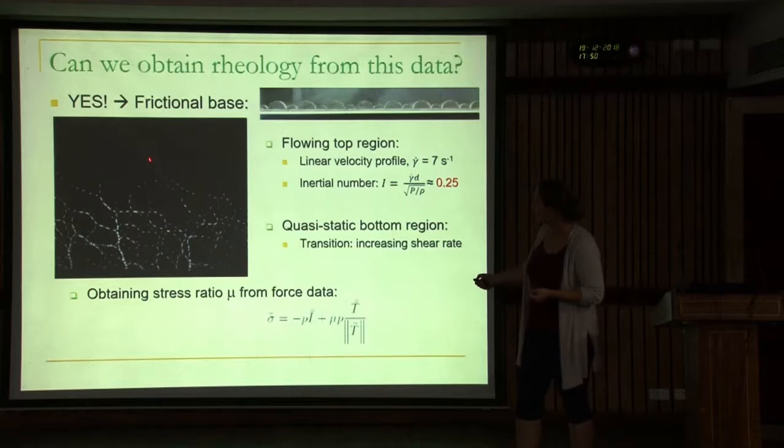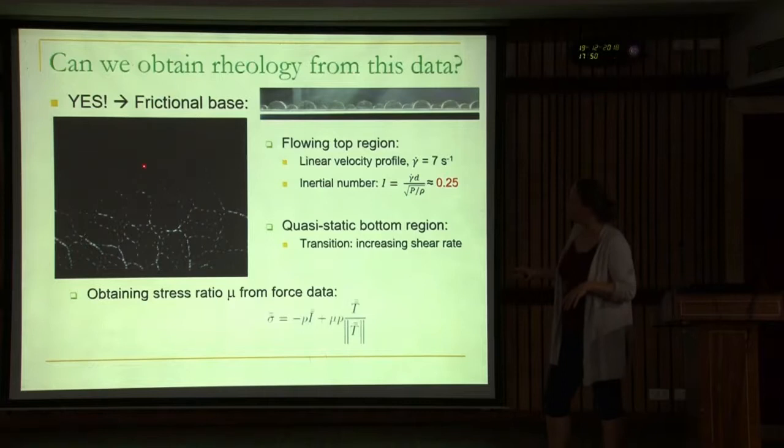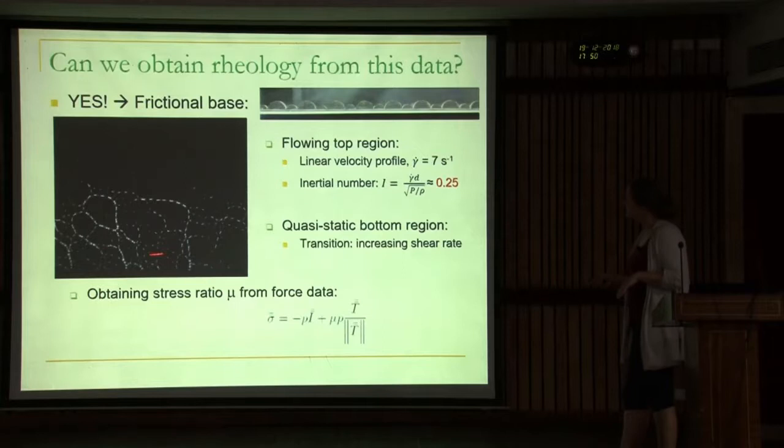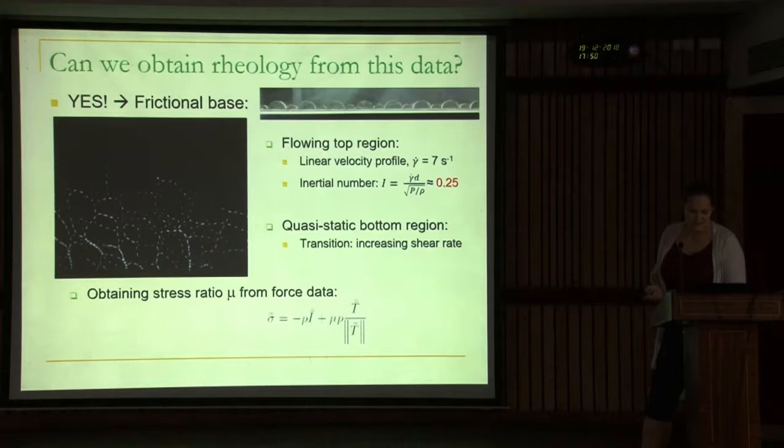Our inertial number reaches about one-quarter at the top, so we're really in this intermediate regime. We have this transition from static, quasi-static to a flowing layer. We can get the stress ratio mu from our force data. We can first compare it with local rheologies — this is the mu(I) rheology. The blue experimental data shows the profile for I as a function of depth from the free surface, and our mu(I) plot follows very nicely with these parameters.